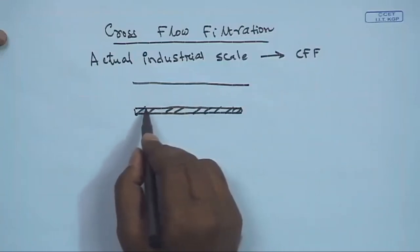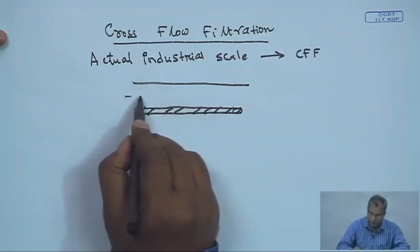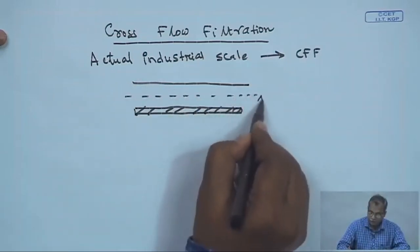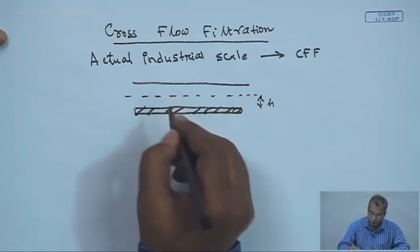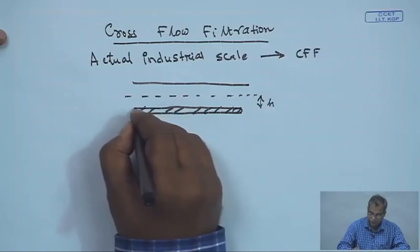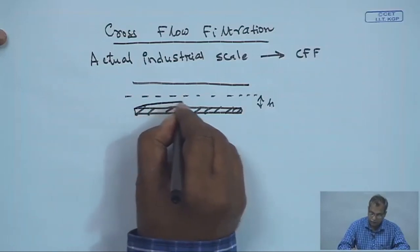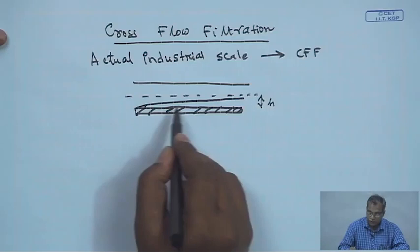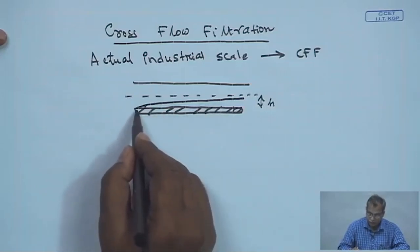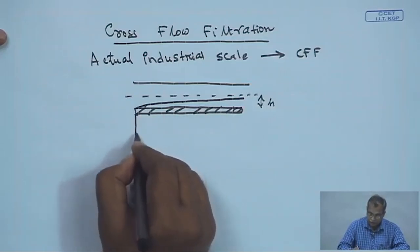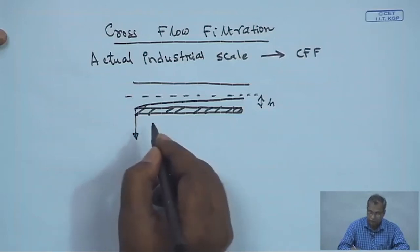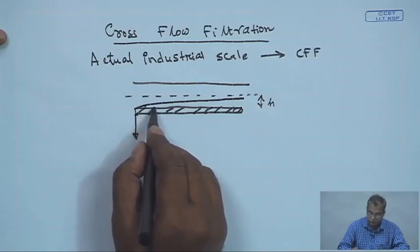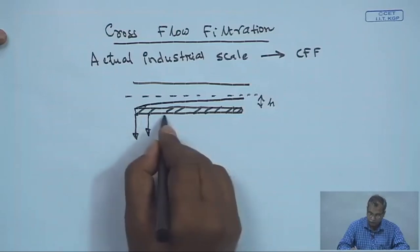When flow occurs, solute deposits over the membrane surface and a mass transfer boundary layer forms. The problem is that this boundary layer can grow unlimitedly; as it grows it offers more resistance to solvent flux. At the beginning of the boundary layer the resistance is minimum and permeate flux is very high, but as thickness increases resistance grows and solvent flux decreases gradually.